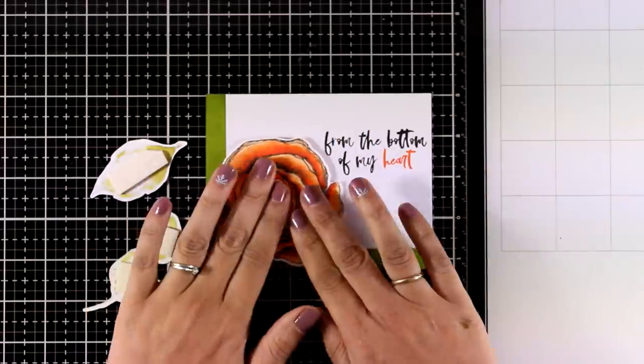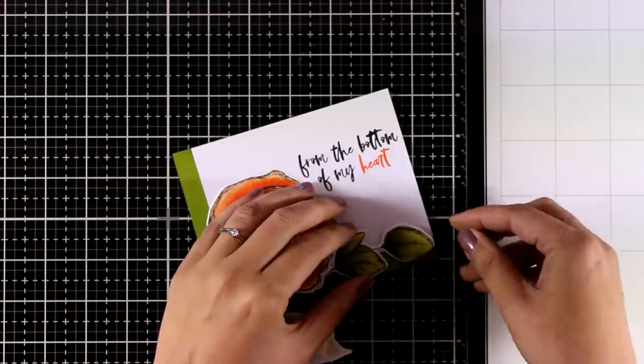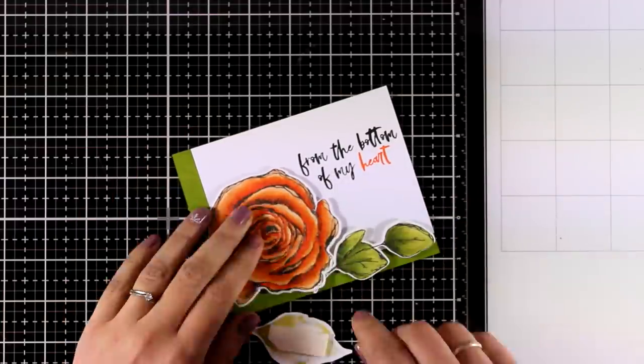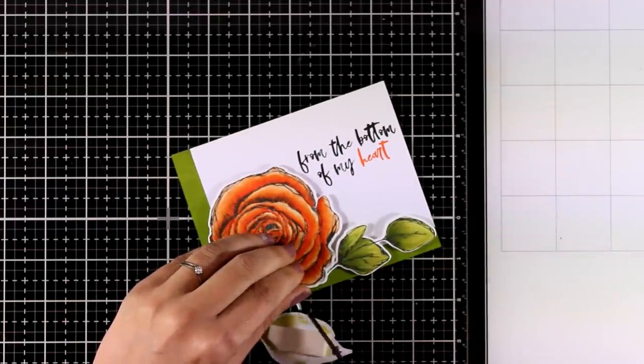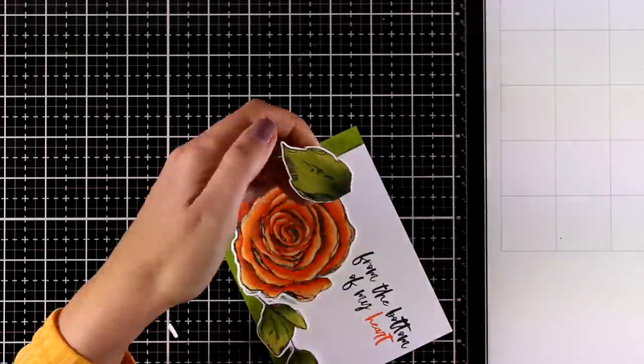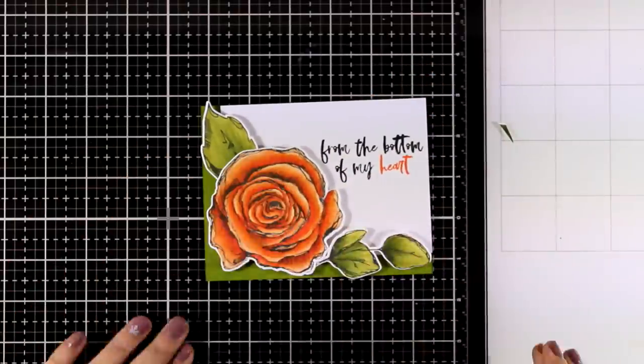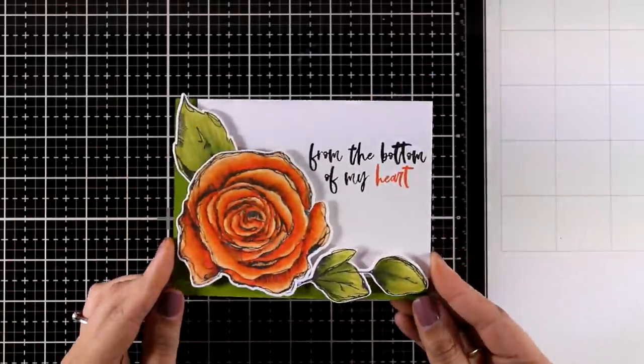And now finally I am going to put my card together, I have foam tape at the back of my flower as well as at the back of the leaves. I am going to stick them down and my card is ready. Now this is actually part of a blog hop so if you are watching on YouTube make sure to click the link below and go to my blog, you will find there a giveaway as well as lots of inspiration.